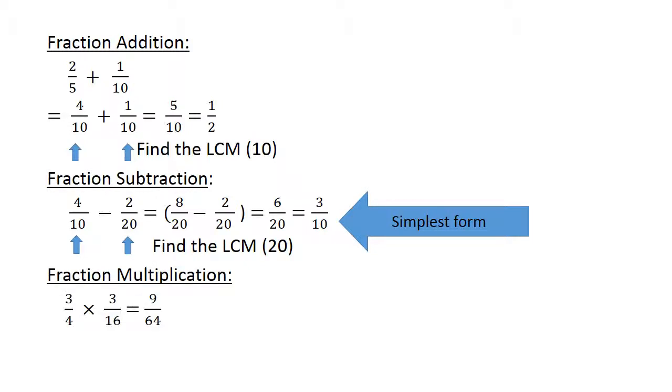Fraction multiplication. 3 over 4 times 3 over 16. 3 times 3 equals 9. 4 times 16 equals 64.